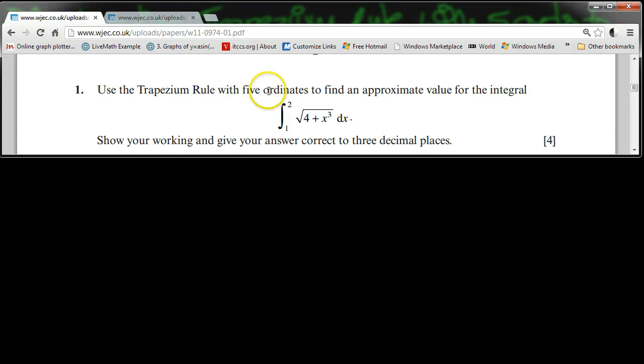Use the trapezium rule with five ordinates to find the approximate value for the integral between 1 and 2 of the square root of 4x cubed dx. Show your working and give your answer to three decimal places.